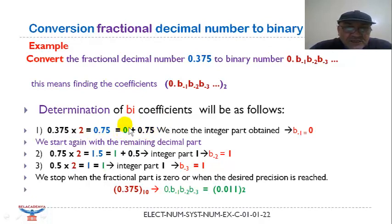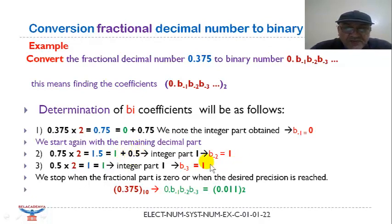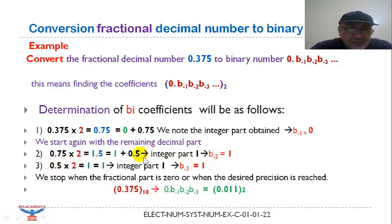The integral part represents B minus 1. We take the fractional part of this number, which is 0.75, and we start again with the remaining decimal part. We multiply it by 2; the result is 1 plus 0.5. The integer number 1 is equal to B minus 2.